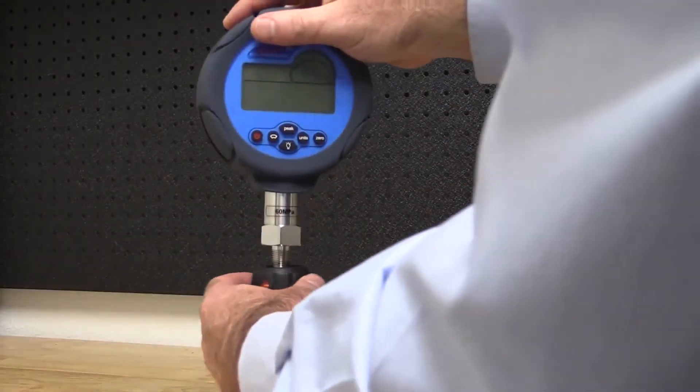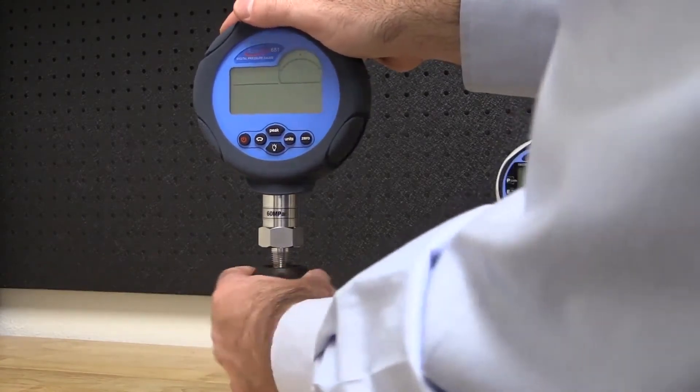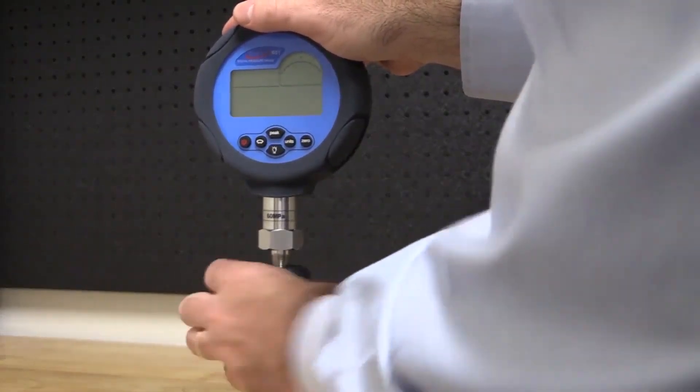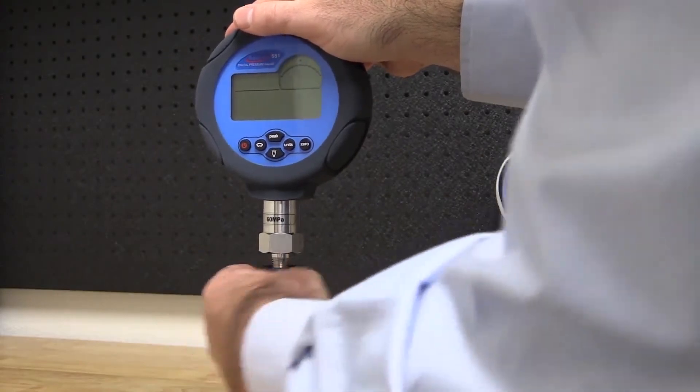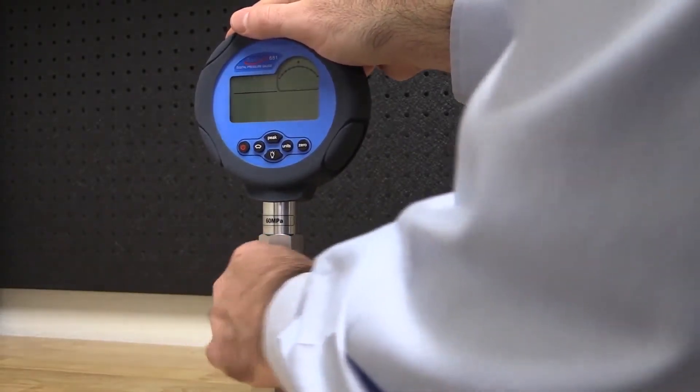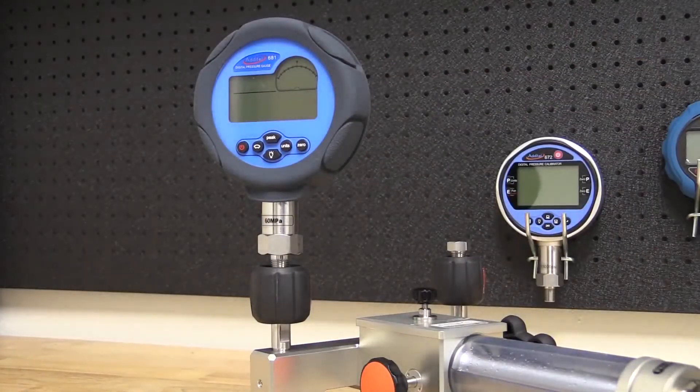The first step is to securely connect the reference gauge to the pump. The device under test or DUT could also be connected, but only if it is okay for the DUT to have a vacuum pulled on it.